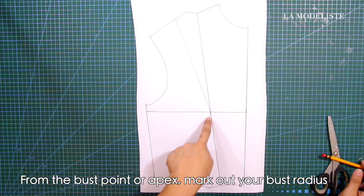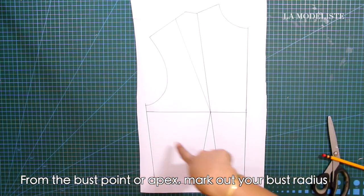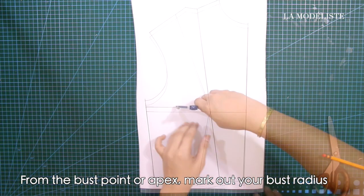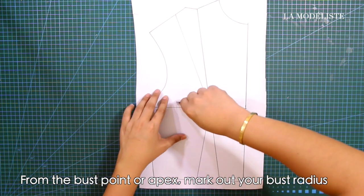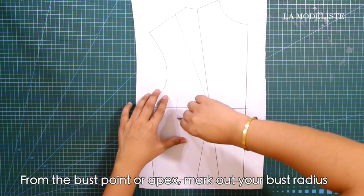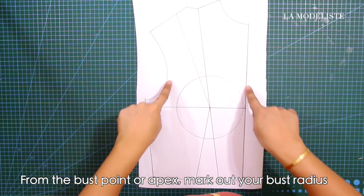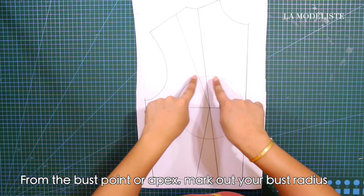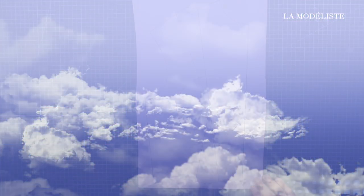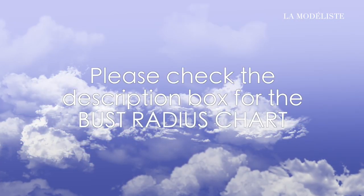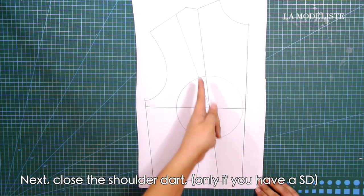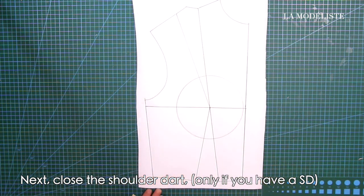From the bust point or apex, mark out your bust radius. Next, close the shoulder dart only if you have a shoulder dart.